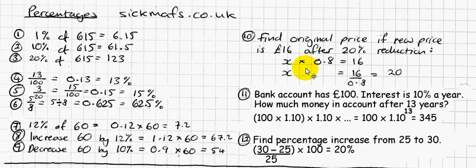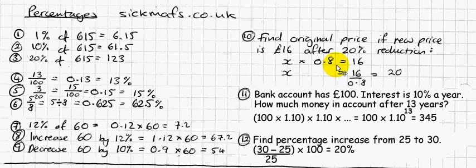If you want 80% of something, you multiply, as we explained. So 80% of x equals 16, because 16 is the final result — our new price. How do we work out x? You simply rearrange the equation, so that '× 0.8' becomes '÷ 0.8'. Then x = 16 ÷ 0.8 = 20. So I've found the original price.